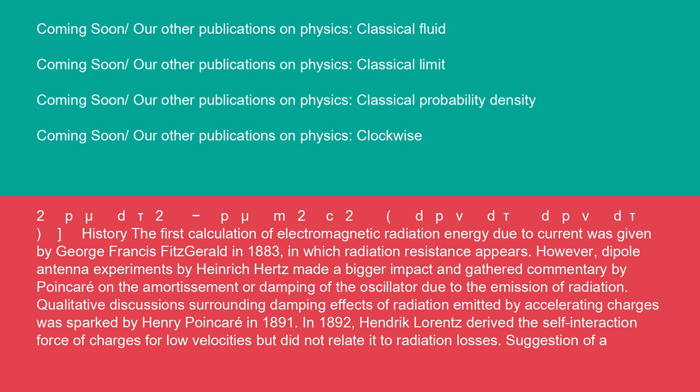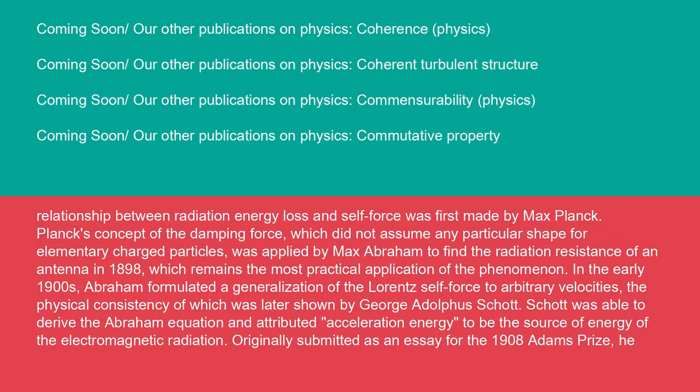In 1892, Hendrik Lorentz derived the self-interaction force of charges for low velocities but did not relate it to radiation losses. Suggestion of a relationship between radiation energy loss and self-force was first made by Max Planck. Planck's concept of the damping force, which did not assume any particular shape for elementary charge particles, was applied by Max Abraham to find the radiation resistance of an antenna in 1898, which remains the most practical application of the phenomenon.